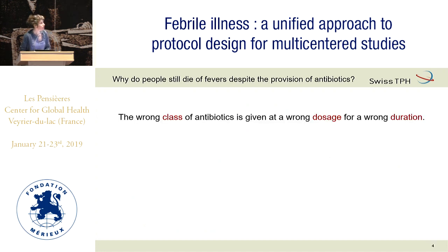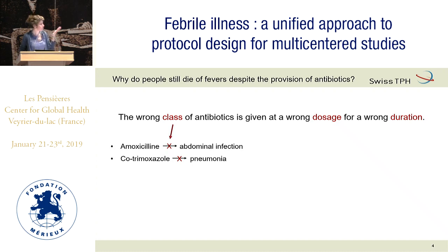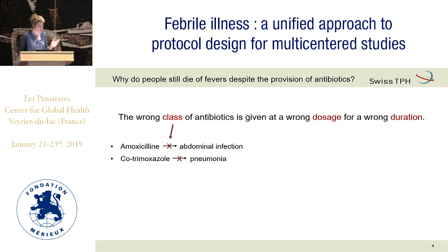Another reason we don't manage to decrease mortality is that we give the wrong class of antibiotic, at the wrong dosage, for the wrong duration in many cases. Clinicians in the field often don't know which antibiotic works on what — they tend to give amoxicillin for an abdominal infection, which obviously won't work, or they don't know that Pneumococcus has become completely resistant to cotrimoxazole.